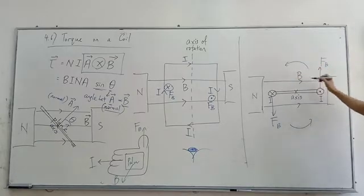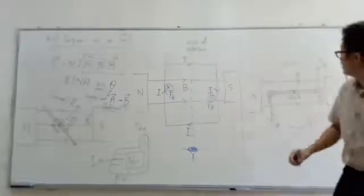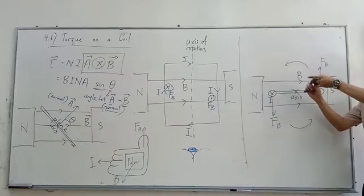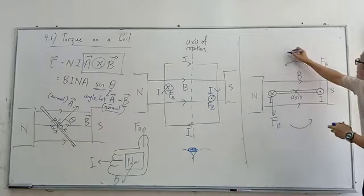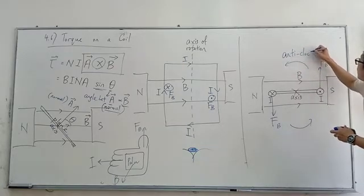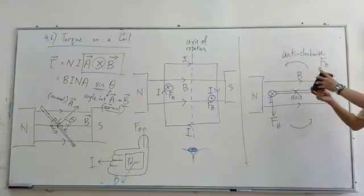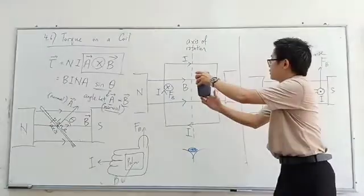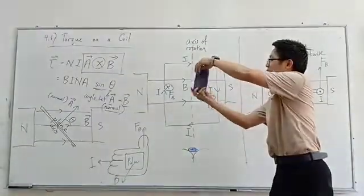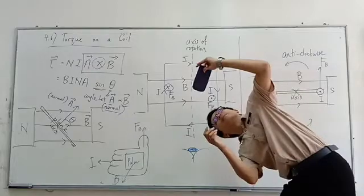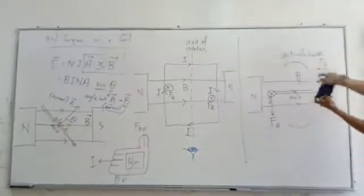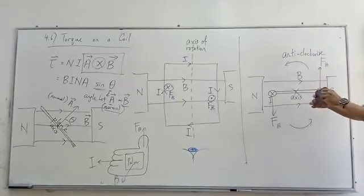If we look from the body position, we see this coil rotating anticlockwise. When viewed from below, we see anticlockwise rotation.